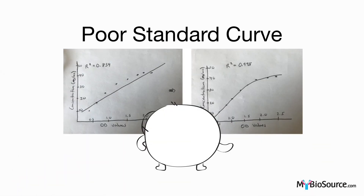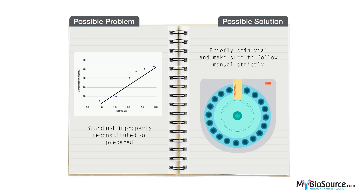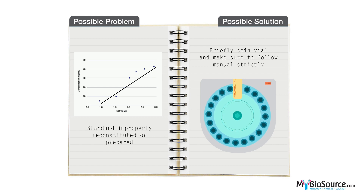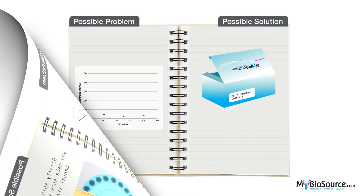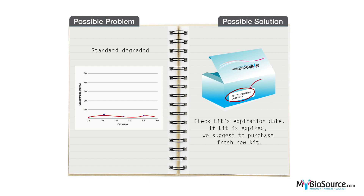If you are getting a poor standard curve, this may be caused by the standard being improperly reconstituted or prepared. In this case briefly spin the vial and confirm the standard is thoroughly dissolved. The standards in the kit may also be degraded; please check the expiration date to ensure your kit is not expired. If it is expired, we suggest purchasing a fresh new kit.